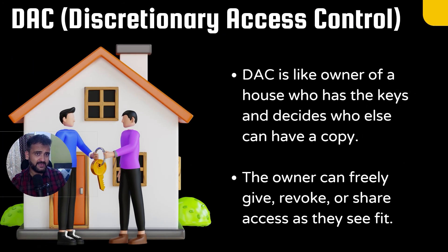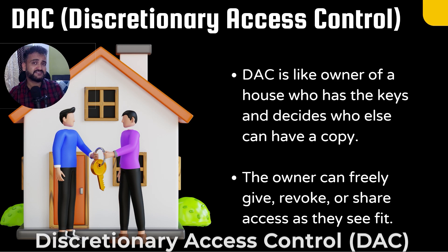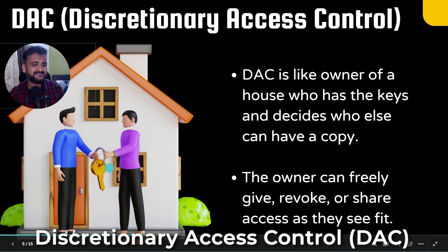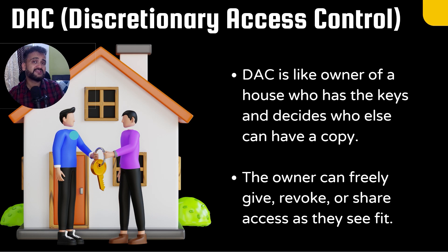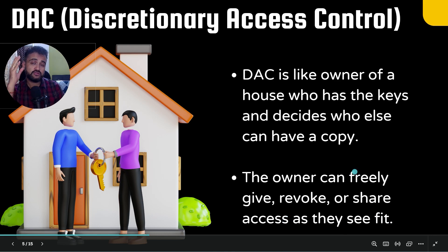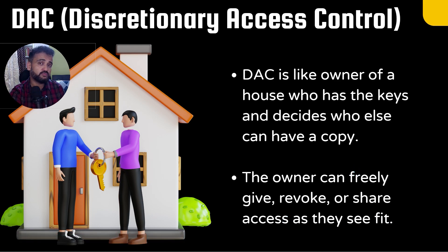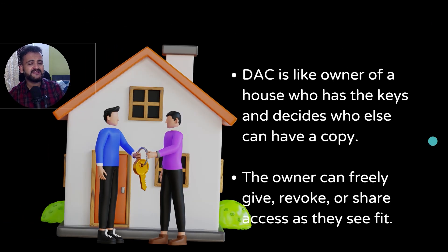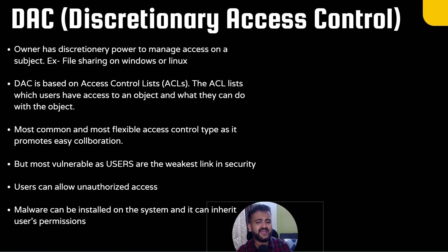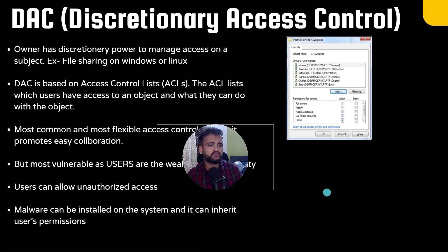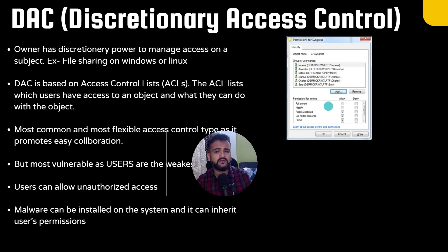The first access control type is Discretionary Access Control (DAC). As you can see in this image, there is a house owner giving keys to a tenant. DAC is like a house owner who has keys and decides who else can have a copy. The owner can freely give, revoke, or share access as they see fit — they can take the keys back if they want the tenant to move out. Discretionary means the owner decides who will have access to the files, with full control, modify, read, or execute permissions.